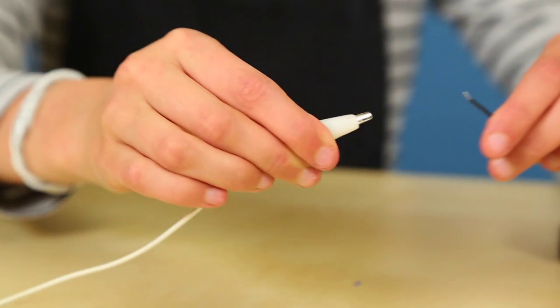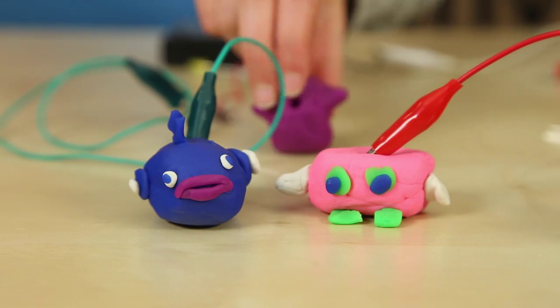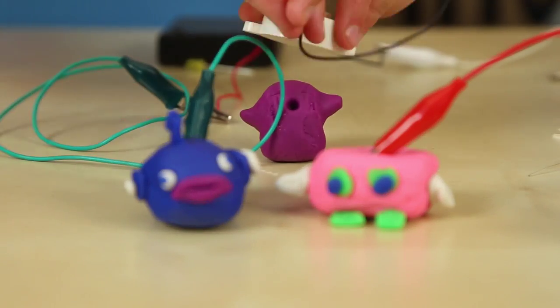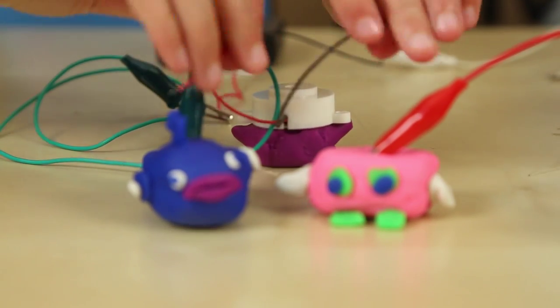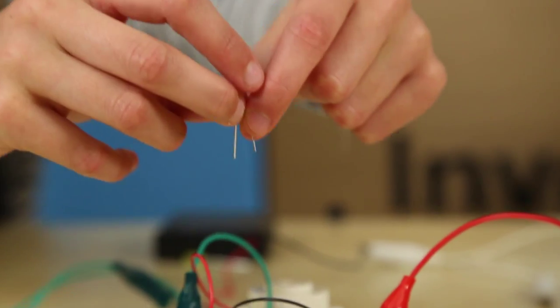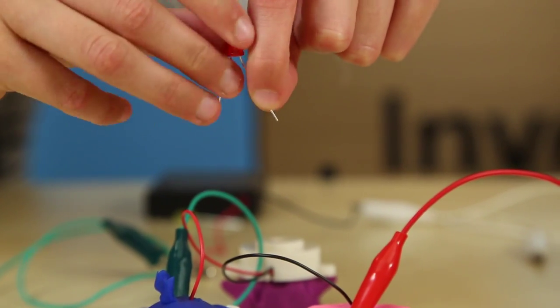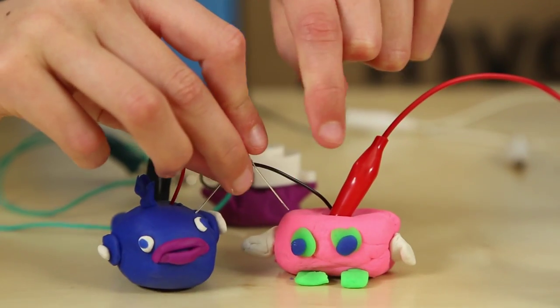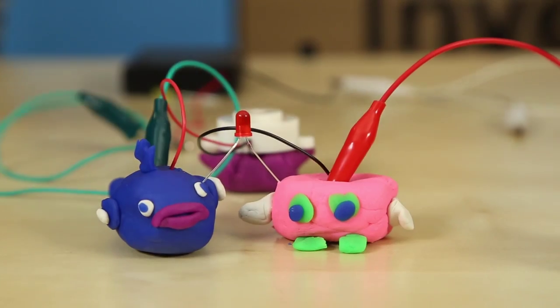Take the third crocodile clip. Clip one end onto the negative black wire of the battery pack. Link two dough models with an LED and buzzer. Make sure the long leg or red buzzer is in the model connected directly to the battery pack.